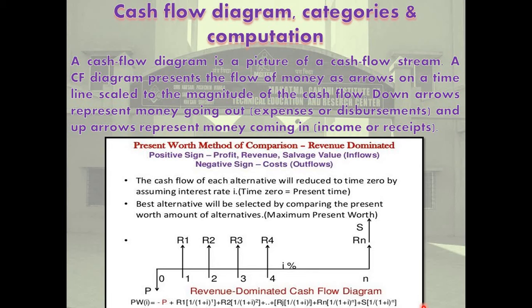The initial outlay is generally estimated before the start of the project, but the final expenditure to set up the project will not be exactly equal to the initially estimated outlay. This is due to project overrun in terms of cost and time. Similarly, the annual operating and maintenance costs will vary over the period of the life of the project. The scrap value at the end of the project's life, which is estimated now, may be different when the project reaches the end of its life. The annual revenues are estimated based on demand and the possible selling price per unit during the life of the project.